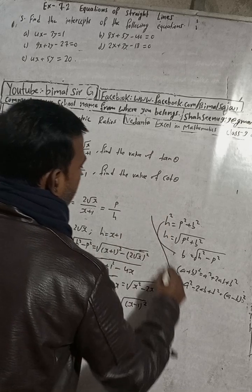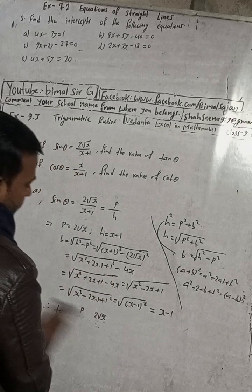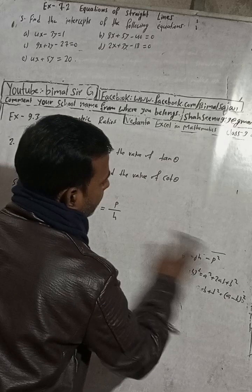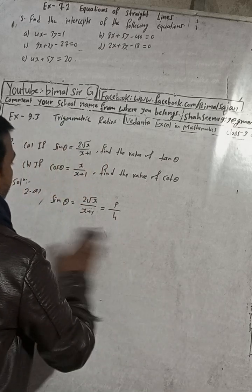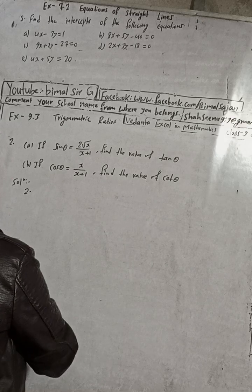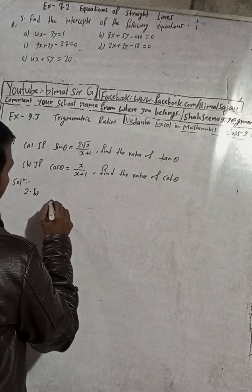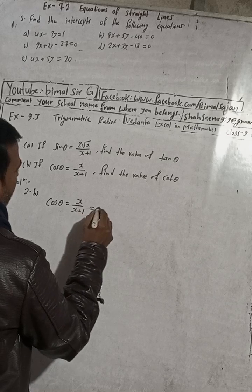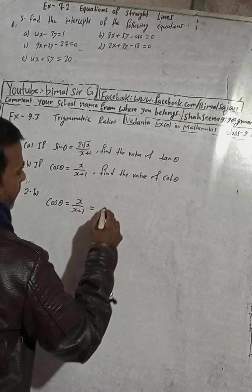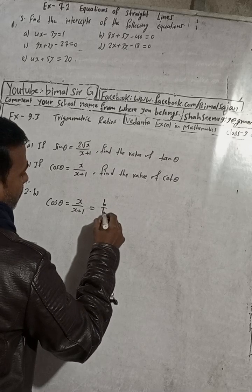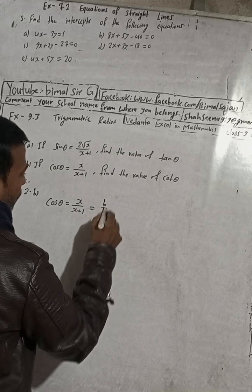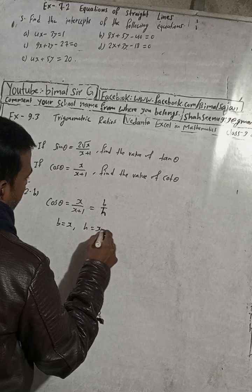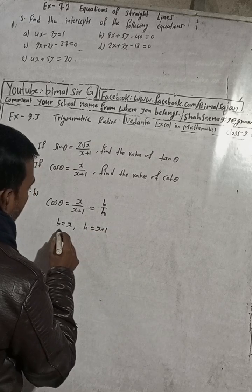This is a raw proof. Now part B solution — B number is given here: cos theta is equal to x by x plus 1. This can be written again as the cos theta formula which is B by h. So B is equal to x and h is equal to x plus 1.